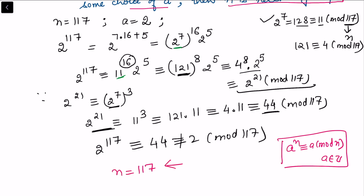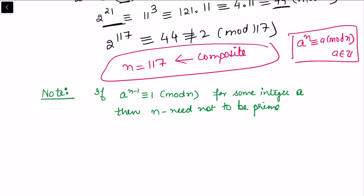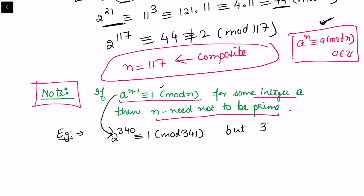Hence we can use Fermat's theorem as a primality test. However, it is important to note that if a^(n-1) ≡ 1 (mod n) holds for some integer a, this does not guarantee that n is prime — the converse of Fermat's theorem is not true. To illustrate this, consider: 2^340 ≡ 1 (mod 341). This congruence holds, yet 341 = 11 × 31 is not a prime — it is composite.